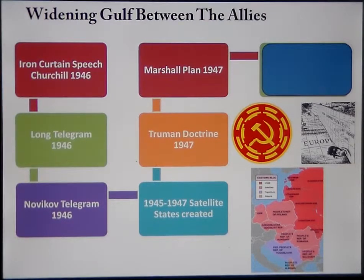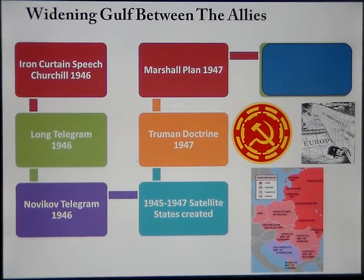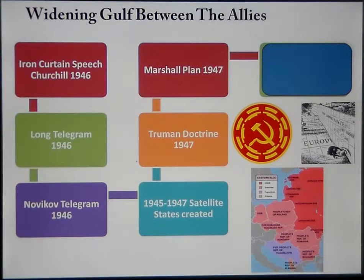Hand in hand with this goes the Marshall Plan of 1947. The only way to contain communism was by spending money to rebuild the shattered economies of Europe, providing them with money to rebuild as quickly and effectively as possible so that communism did not seem appealing. The Americans agreed to provide about $13 billion of aid, but required those countries that took the money to trade freely with the USA, which would have a positive knock-on effect to the American economy.